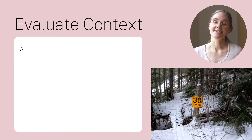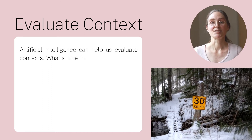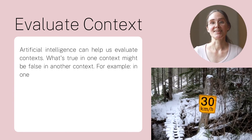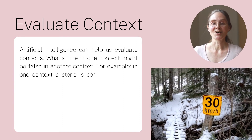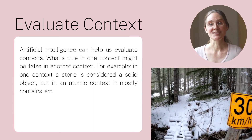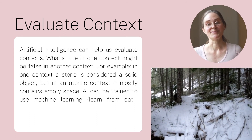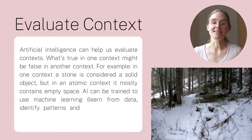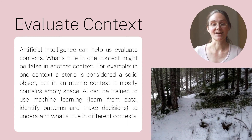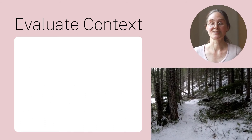Artificial intelligence can help us evaluate contexts. What's true in one context might be false in another context. For example, in one context a stone is considered a solid object, but on an atomic level it is considered mostly containing empty space. Artificial intelligence can be trained to use machine learning — to learn from data, to identify patterns and make decisions, to understand what's true in different contexts on different levels.